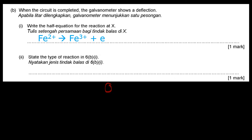Next, state the type of reaction in 6B1. The oxidation number of iron(II) ion, +2, turns to +3. The increase in oxidation number and release of electron indicates an oxidation process.